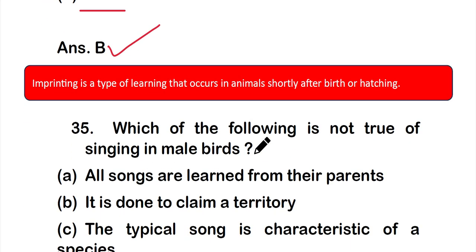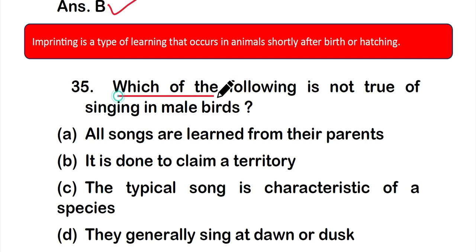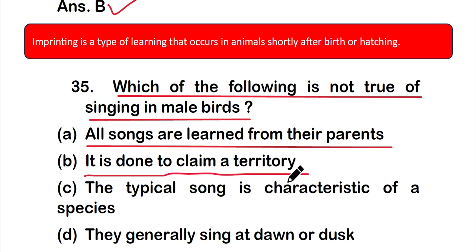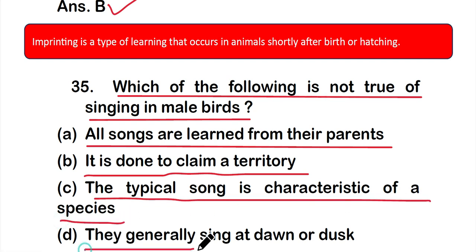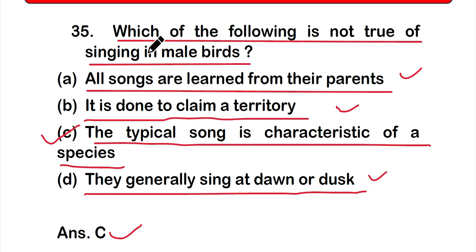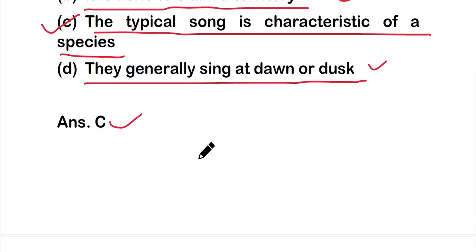Question number 35: Which of the following is not true of singing in male birds? Option A: all songs are learned from their parents, option B: it is done to claim a territory, option C: the typical song is characteristic of a species, or option D: they generally sing at dawn or dusk. The correct answer is option C — the typical song is characteristic of a species is not true, while options A, B, and D are true of singing in male birds.